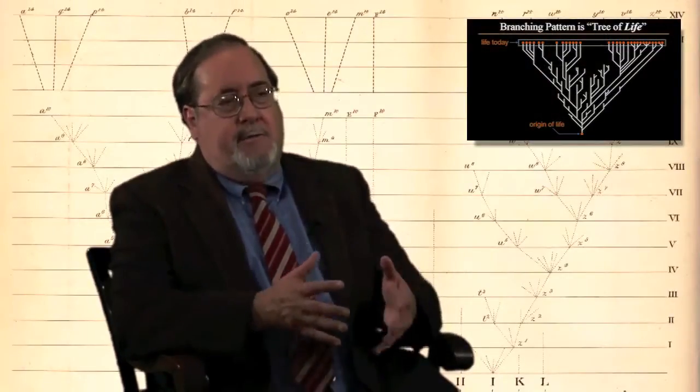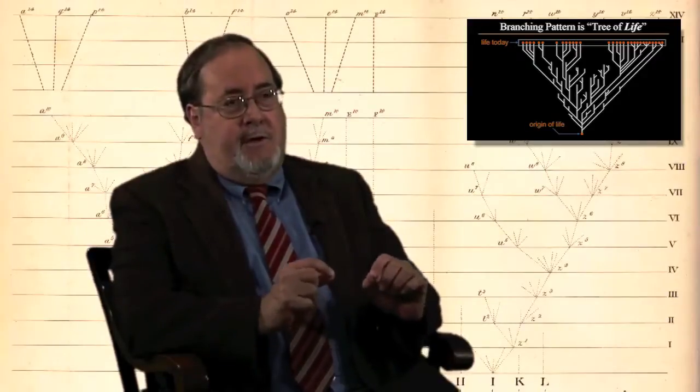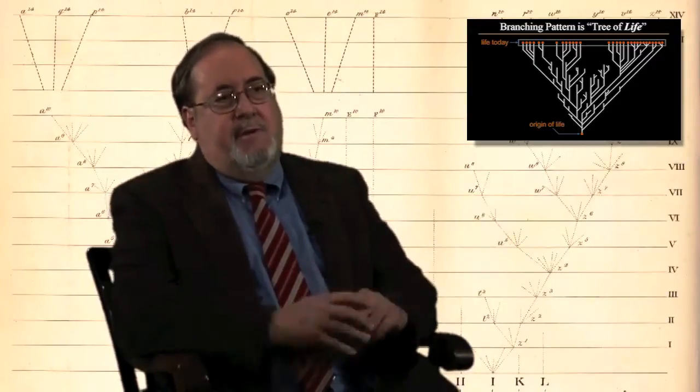Supposedly, if his theory were correct, if we look at the fossil record we would see a common ancestor and then these multiple branches coming off with, as Darwin put it himself, innumerable transitional steps in between.